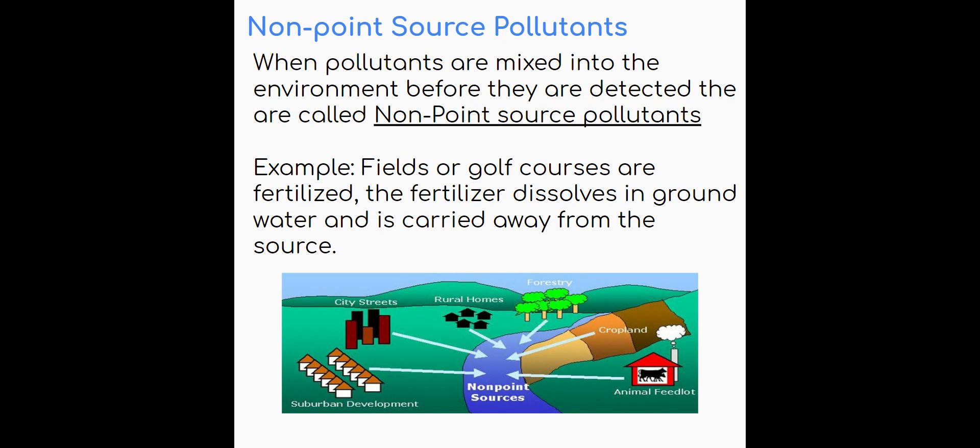The other side to the story is non-point source pollutants. So this is when you have pollutants that are mixed into the environment, but they're mixed in at a source, but they come from a variety of different sources. They are mixed in before they are detected, essentially. We call these non-point source pollutants. Essentially, if you think about fields or golf courses or farmers' fields and we fertilize those fields, we know fertilizer is a non-persistent pollutant. That fertilizer, as it rains, will be picked up by the rain and it'll be washed down into the river.